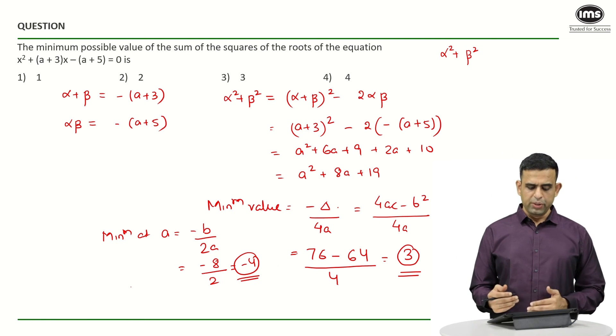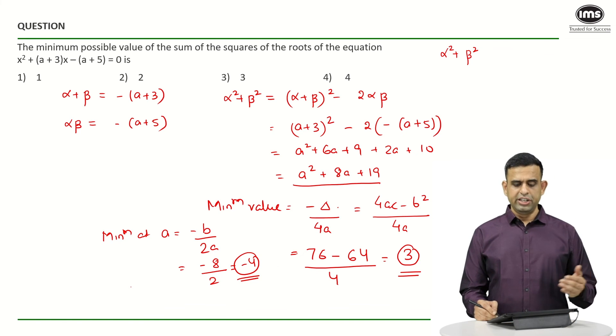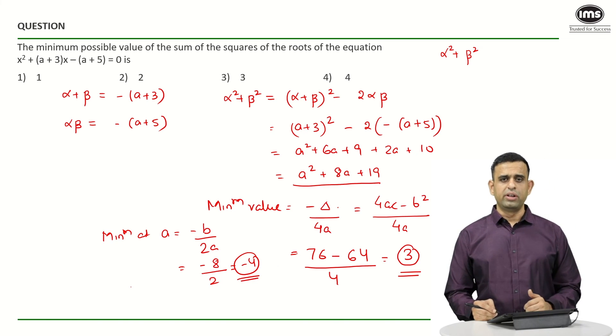At a = -4, the expression becomes minimum. So one could also have possibly put a as -4 here and you will get nothing but 16 - 32 + 19. 35 - 32 will give you again the value 3.